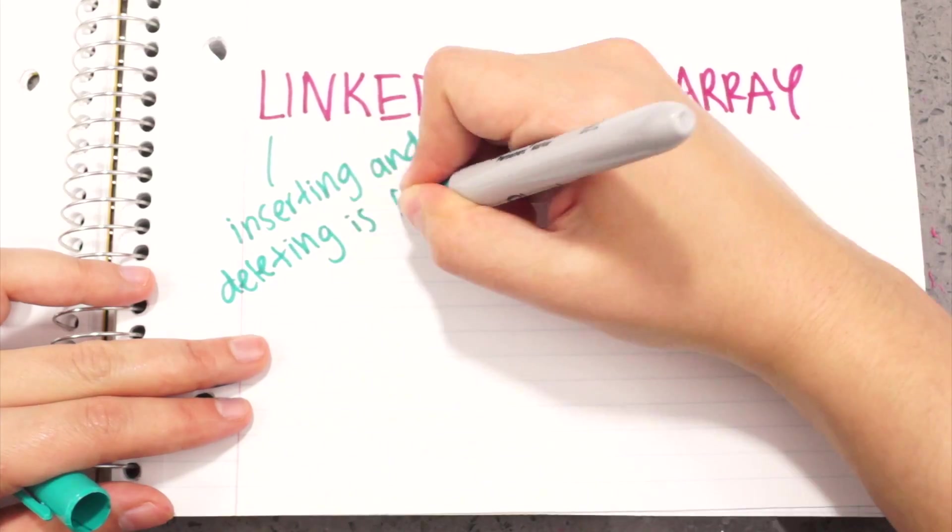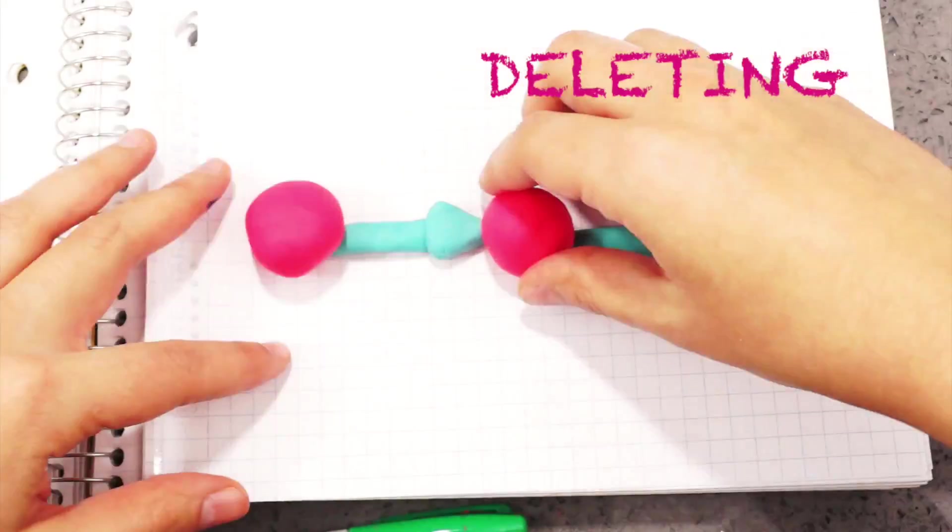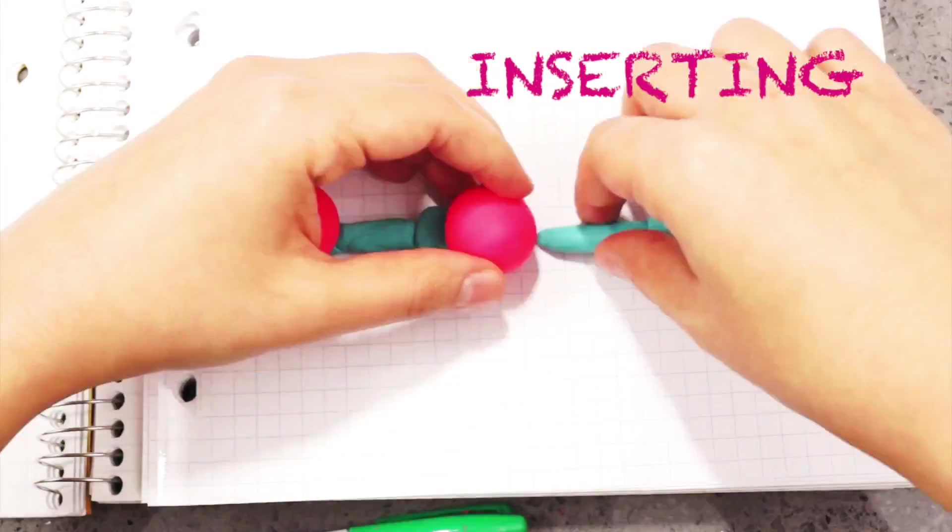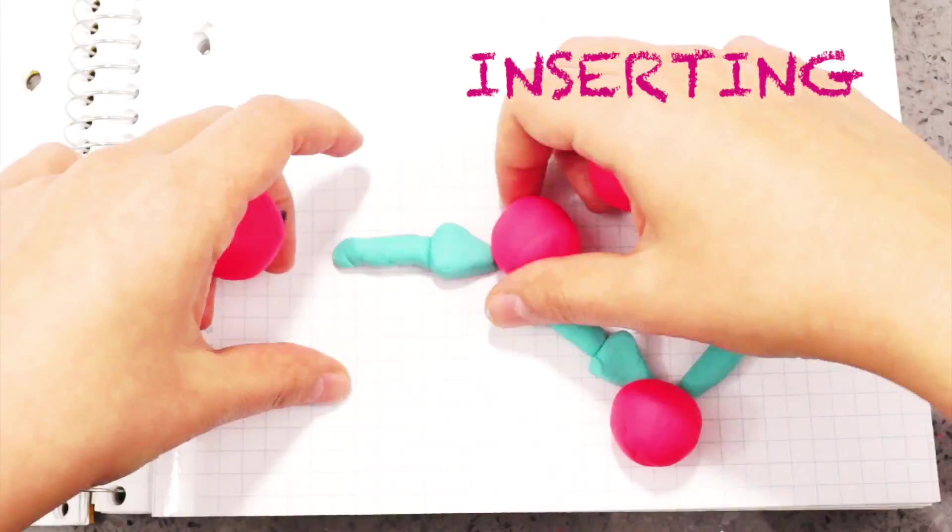With the linked list, inserting and deleting is faster and simpler by moving pointers. To remove a node, we move the pointer of the previous node to the successor node. To insert a node, the previous node points to the new node, and the new node points to the next node.